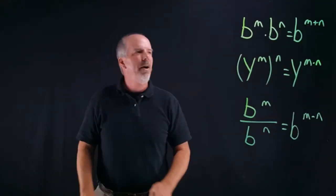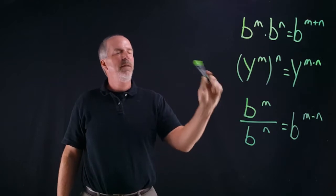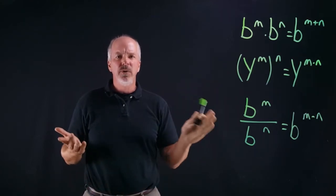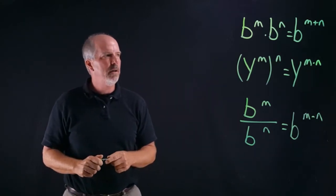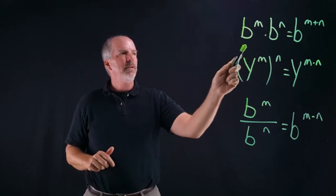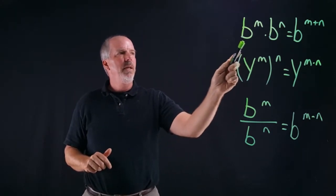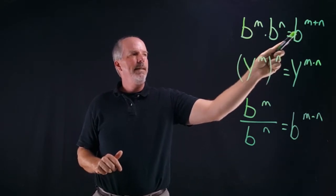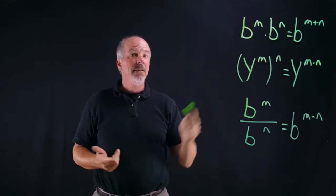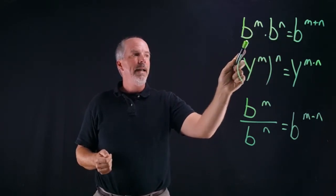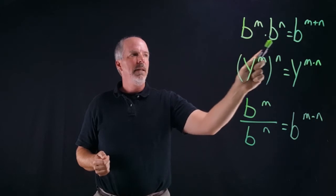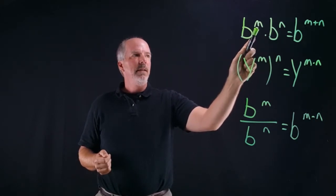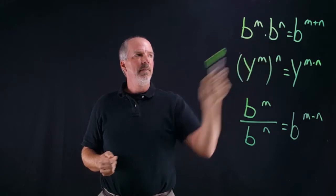Hello everybody. Today we're talking about exponent laws — rules, whatever you want to call them. Let's look at this first one: b to the m times b to the n equals b to the m plus n. We have like bases — b and b, same base — b to the m, b to the n.